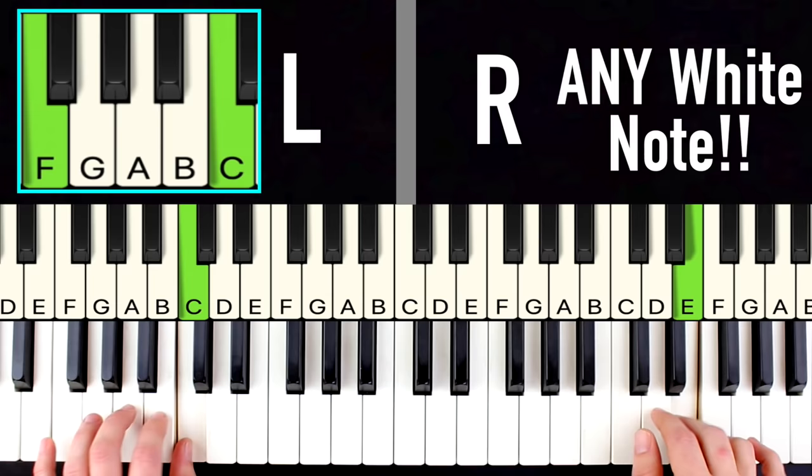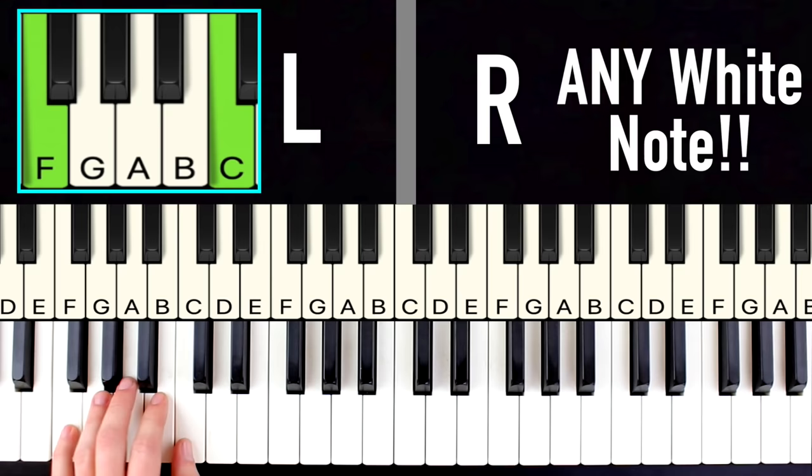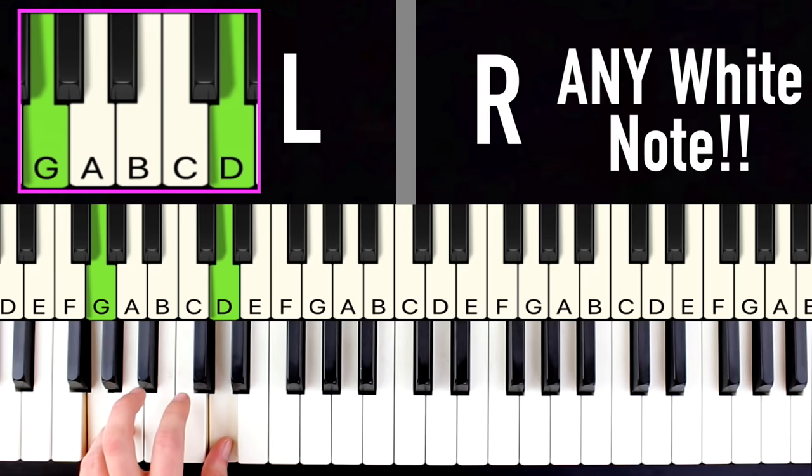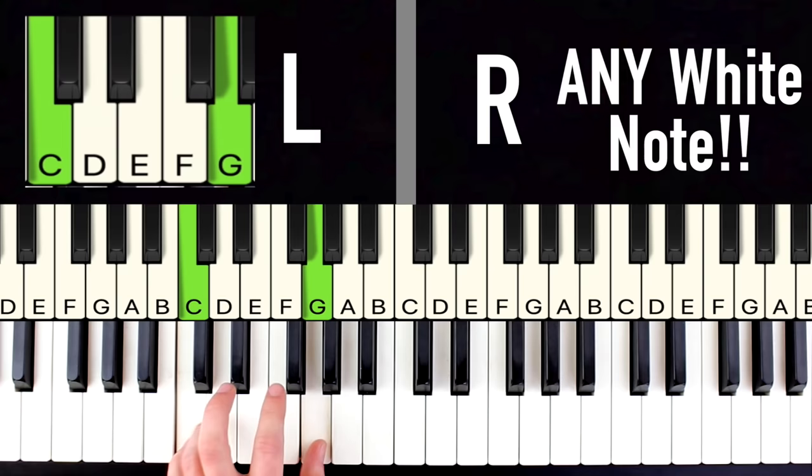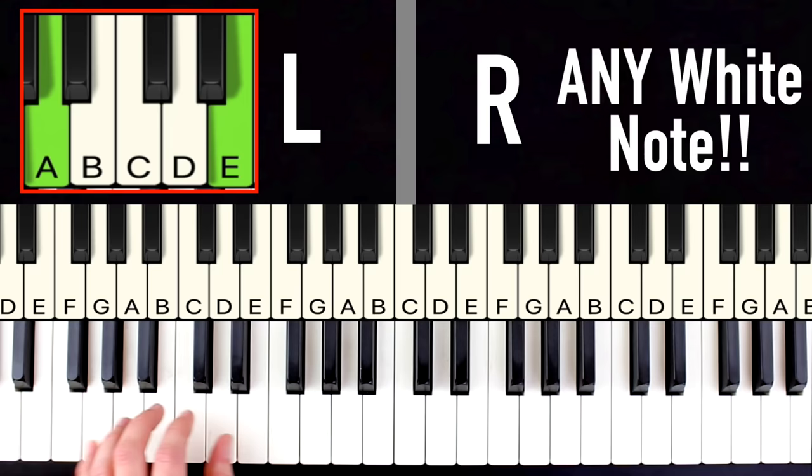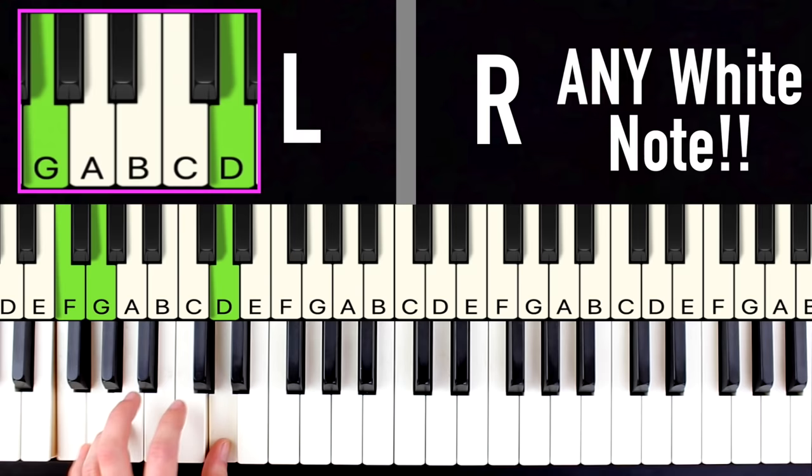And then finally for our fourth position, our last one, if we go here which is our third position and we move both of these notes just up one note, again you can play any white note and it's always going to sound good. So now we have our four positions for our left hand, right? We have our first one. Then we move down two. One two. Then down two again. One two. And then finally up one. And if you play this it's going to add so much depth to your sound. Here's what it sounds like.